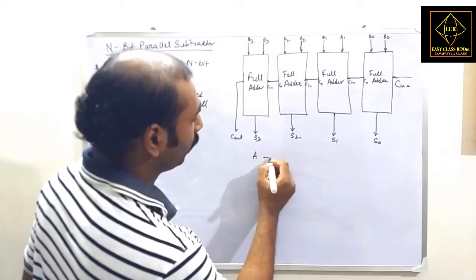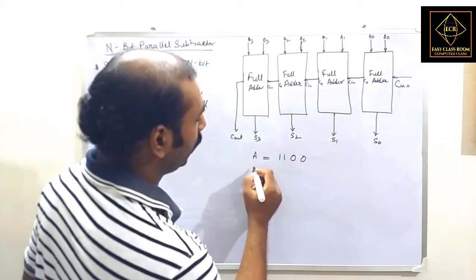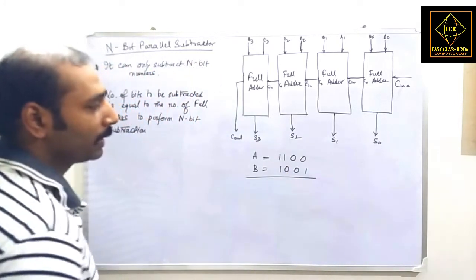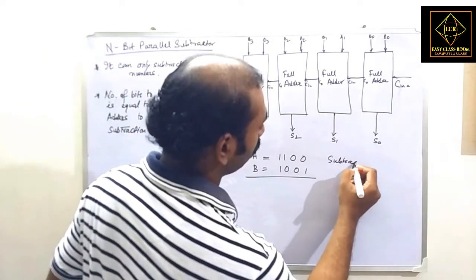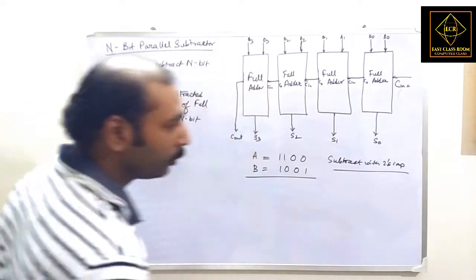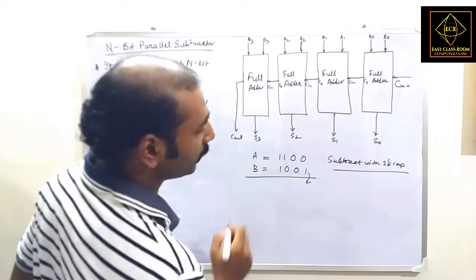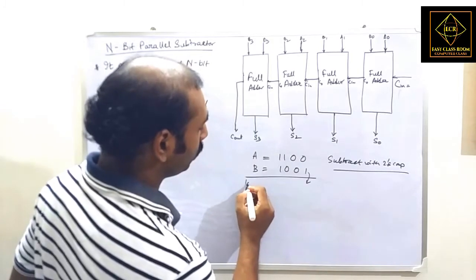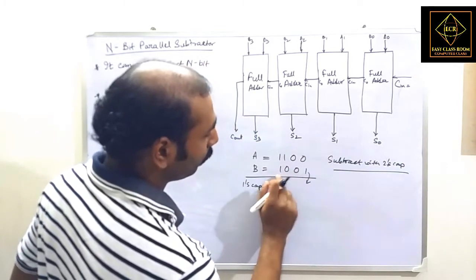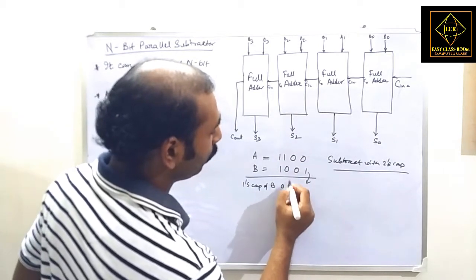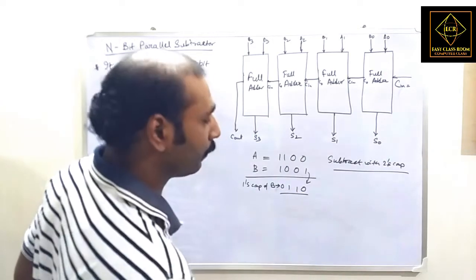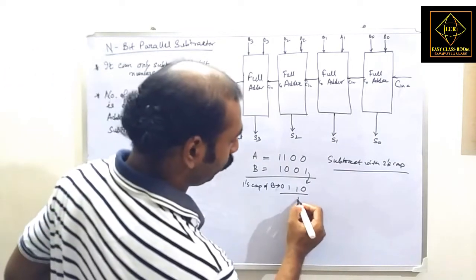For example, A has the number 1100 and B has the number 1001. If we want to subtract using two's complement, the first step is to get the one's complement of B, which is bitwise inversion: 1 becomes 0, 0 becomes 1, 0 becomes 1, 1 becomes 0. So the one's complement of B is 0110.